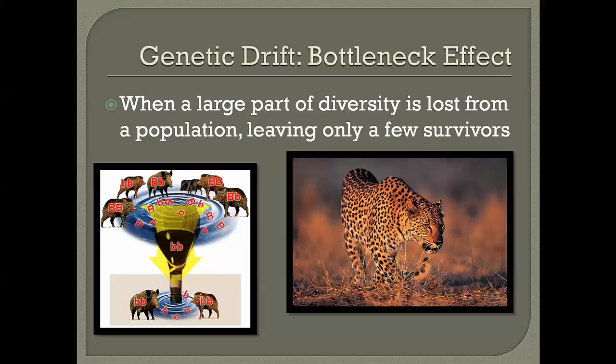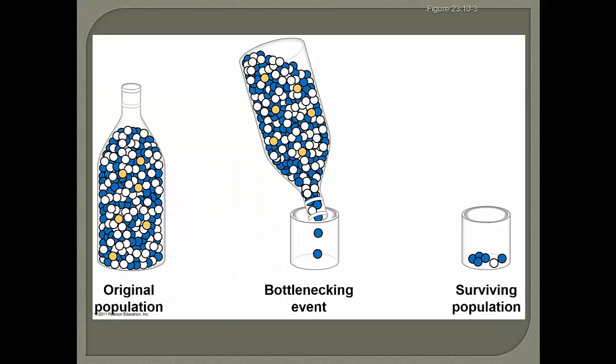We see similar situations in animals that have nearly gone extinct — a loss of genetic diversity where all survivors have much less diversity than the original population. In a bottleneck, an original population with white, blue, and yellow individuals might be reduced by overhunting or a hurricane, and the surviving population no longer represents the same allele frequencies. That's microevolution.